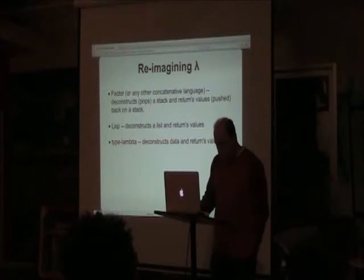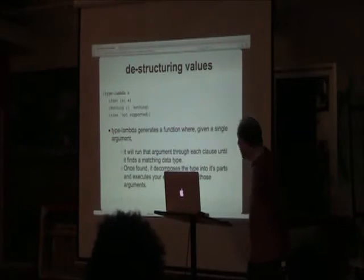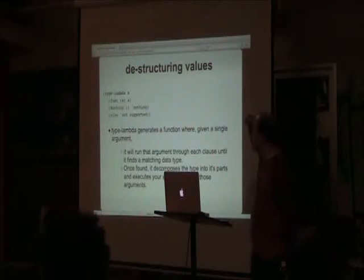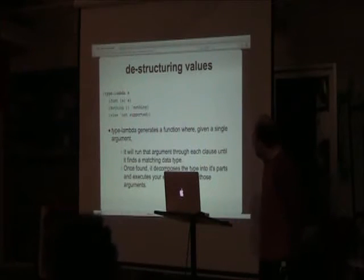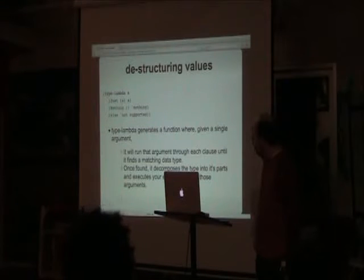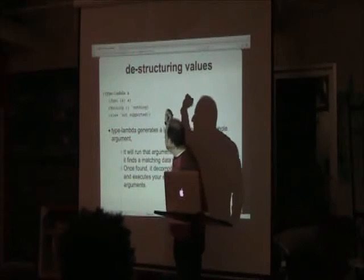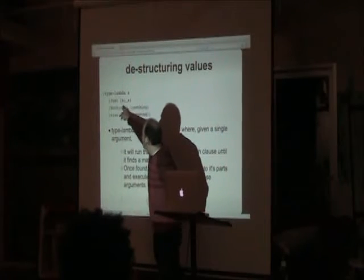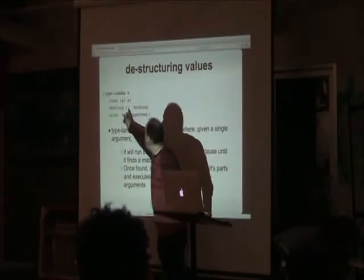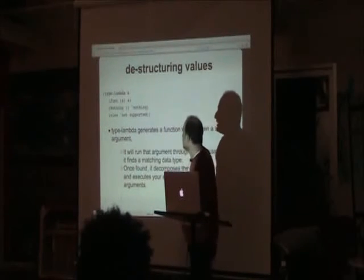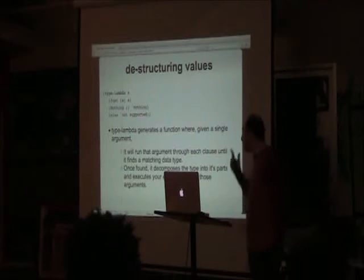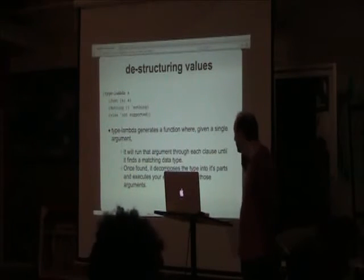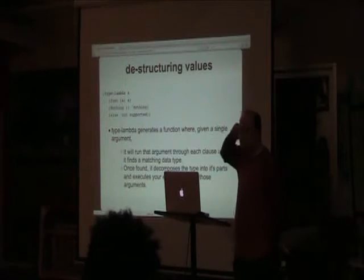A type-lambda is like a lambda except it has pattern matching capability. The main object you receive would be x, and it checks if x is a Just type, deconstructs it to get field a, and returns it. Same thing with Nothing — there's nothing there so return nothing, or flag it as not supported. It goes through each clause, and when it finds a matching clause, deconstructs the value and calls your expressions on it.